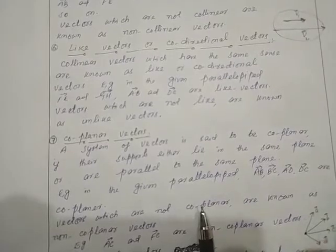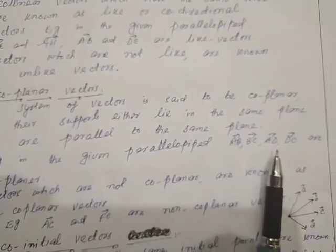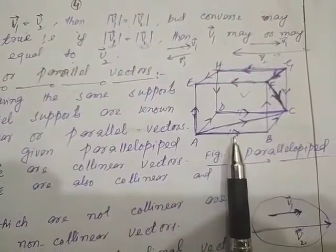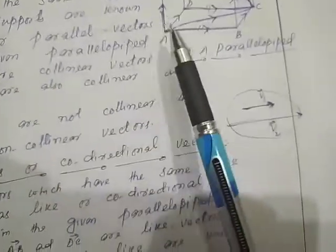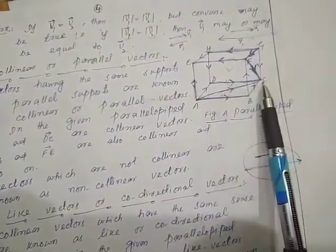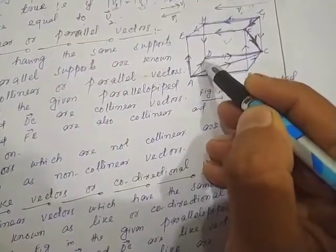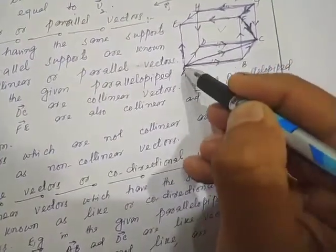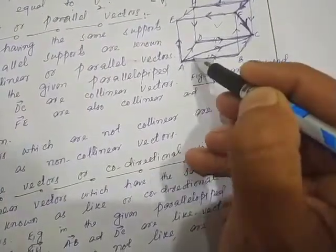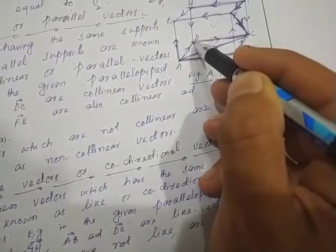So coplanar vectors are of two types: either they lie in one plane, or they lie in parallel planes. For example, in the given parallelepiped, AB, BC, AD, and DC are all coplanar vectors because they are lying in the same plane ABCD. All these vectors — AB, BC, AD, DC, and AC — lie in the plane ABCD.